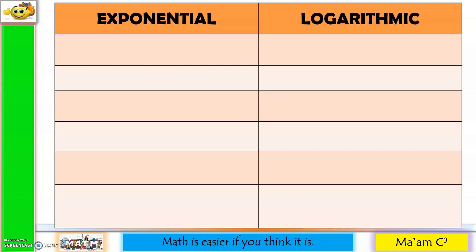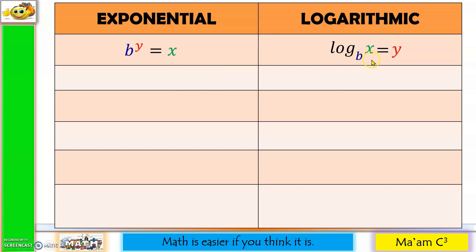This time, let's convert exponential form to logarithmic form. First, you write the log. Next, your base in the exponential is also your base in the logarithmic form. Your answer in the exponential becomes the number here. And your exponent becomes the answer. Remember that the answer to the logarithm is actually the exponent. To check, convert logarithmic back to exponential: start with b raised to y, then equals x.